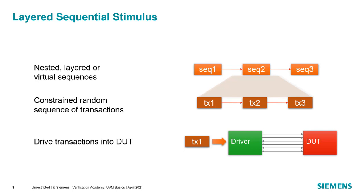Sequences themselves can be nested or layered — you can have a sequence of sequences. We refer to this as a virtual sequence, whose job it is to coordinate the operation of other sequences. Those sequences can be run in parallel or sequentially, allowing you to create as complex a set of scenarios as you may need. The randomization takes care of figuring out the next transaction to generate based on the current state of the system, ensuring maximum flexibility.